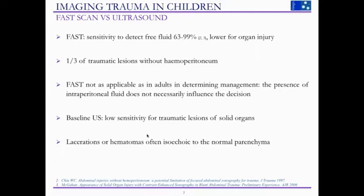What are the alternatives to CT? Looking at the FAST scan, it has a relatively low sensitivity even to detect free fluid, and lower still for detecting organ injury. Also, a third of traumatic lesions will present without a hemoperitoneum, so you are at risk of missing these injuries. FAST was also developed around the management of adult patients, so it may not be as well-suited for pediatric patients. Even a normal baseline ultrasound, even in the most experienced hands, comes with low sensitivity values for traumatic lesions — often because they are iso-echoic to normal parenchyma.